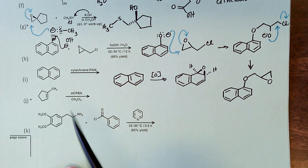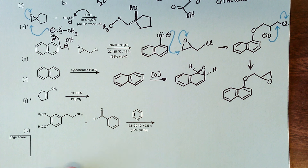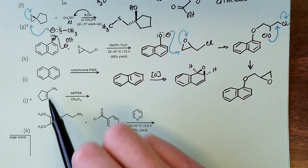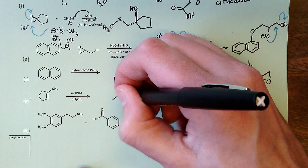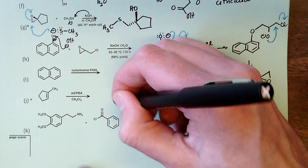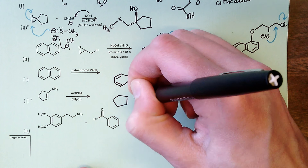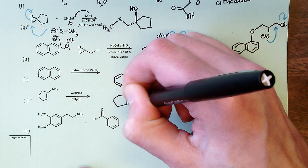Part j: meta-chloroperoxybenzoic acid (MCPBA) in methylene chloride. This will epoxidize the alkene of 1-methylcyclopentene to give the corresponding epoxide.